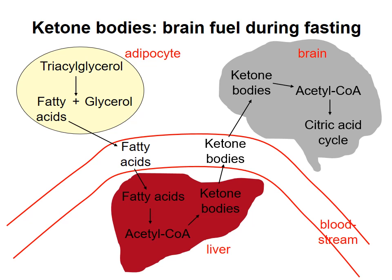Ketone bodies are not used only by the brain. Other tissues, such as muscle cells, can take up and use ketone bodies for energy. But the main purpose of ketone bodies is to provide energy to the brain. During an extended fast, the brain will get most of its ATP by metabolizing ketone bodies.